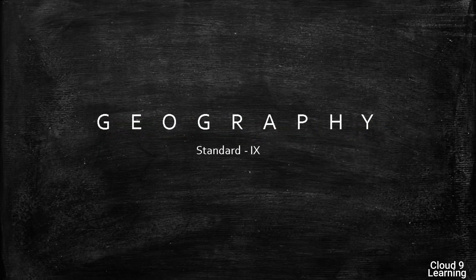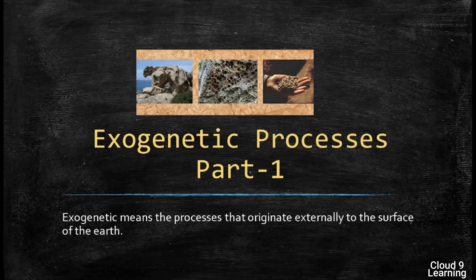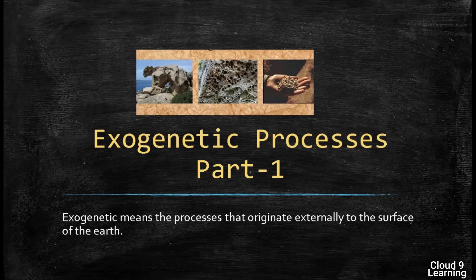We are going to start with the third chapter of geography, that is exogenetic processes, part one. First of all, we will see the meaning of the word exogenetic. Exogenetic means the processes that originate externally through the surface of the earth. As you all know, a number of processes take place on the surface of the earth.